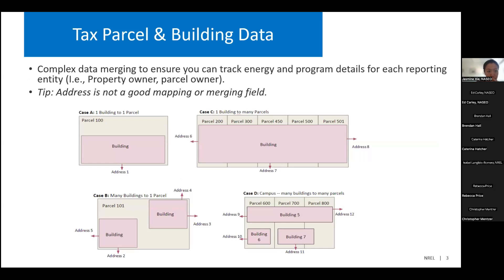Before we get into some of that data management information and the particular information needed in the covered buildings list, I thought it might be nice to ground us in this conversation in the complexity of building information and building data. So we have here in case A a one-to-one relationship — one building on one tax parcel and one address. When you're thinking about matching and merging a bunch of properties together, especially at the state level, that's a pretty simple one-to-one relationship. But in case D, in the bottom right corner, that can get pretty tricky.